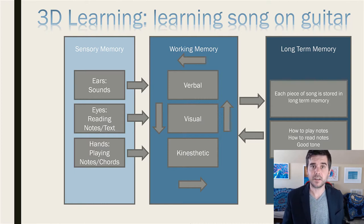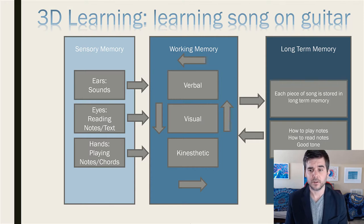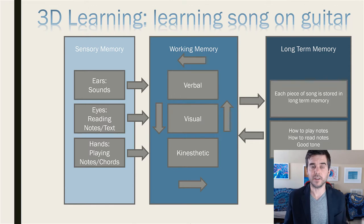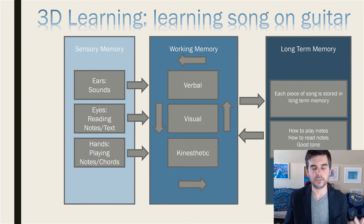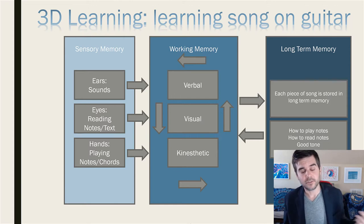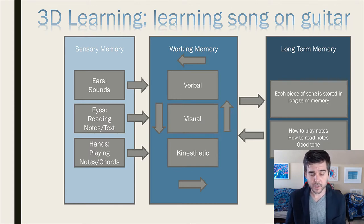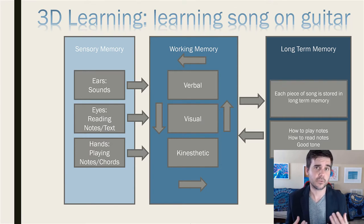Our hands - one hand strumming a pattern, the other hand playing chords and notes. So how are we learning? How is this happening? As we're playing, to learn a song, each piece of the song like the intro is stored in long-term memory so I can pull it out when I learn the next piece. I can learn the intro, then work on the verse - all of a sudden I can play the intro and then the verse. That's our long-term memory at work. I have background knowledge: I know how to play notes, I know how to read notes.